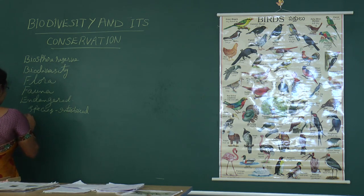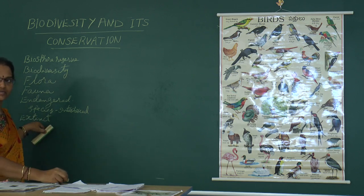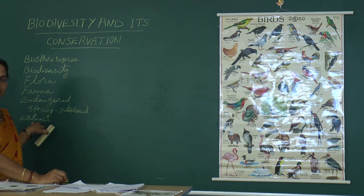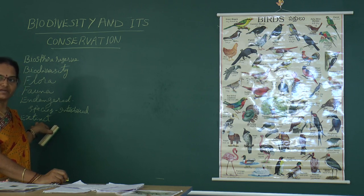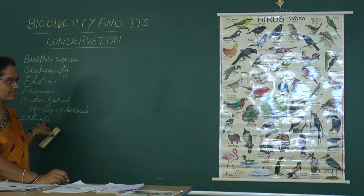Next: the word called extinct. Extinct means these are the organisms which are totally disappeared from the earth. The organisms which are totally disappeared from the earth is known as extinct.